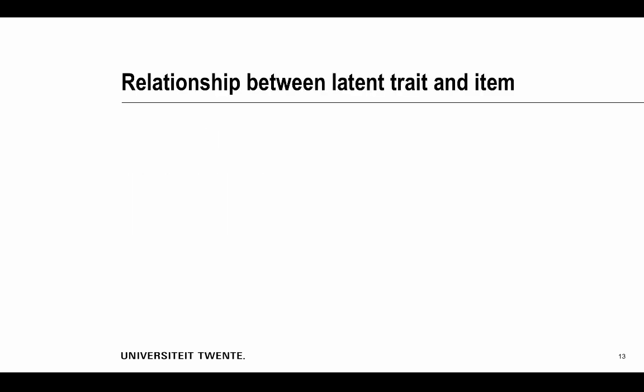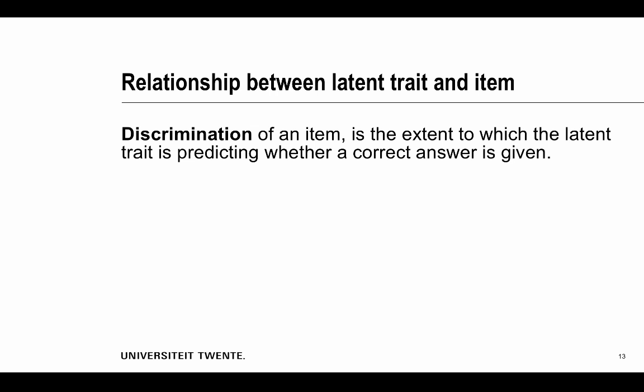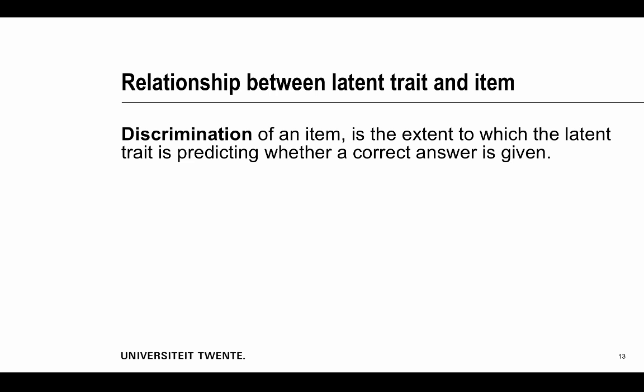The relationship between a latent trait and item can also be modeled in a more complex way. We can include an extra parameter. Discrimination of an item is the extent to which the latent trait is predicting whether a correct answer is given. Let's assume that the difficulty is zero, but the discrimination of the item can be different.